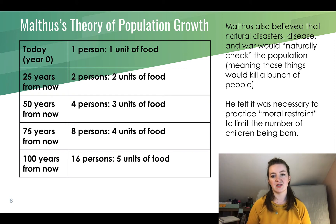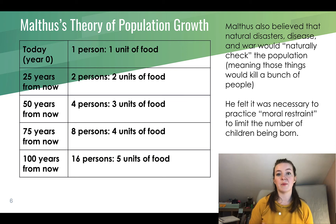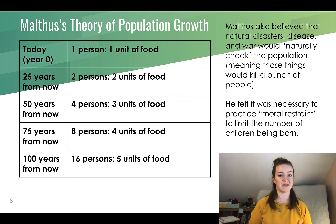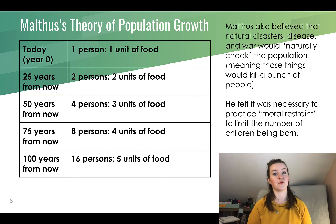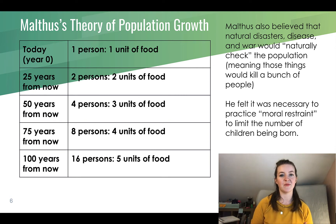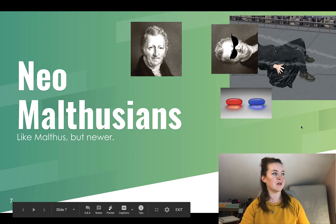Malthus believed that natural disasters, disease, and war would naturally check the population by killing large numbers of people, keeping it under control. His other thought was the necessity of moral restraint — limiting the number of babies being born, meaning people hold back from behaviors not considered moral for the time period.